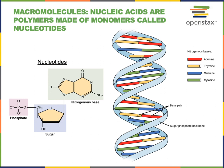Another major difference between DNA and RNA is that DNA is a double-stranded molecule. Two long nucleic acid polymers are held together by hydrogen bonding between the nitrogenous bases of the nucleotides. The base pairing that forms hydrogen bonds is very specific, so that adenine will always form a base pair with thymine, and guanine will always form a base pair with cytosine.